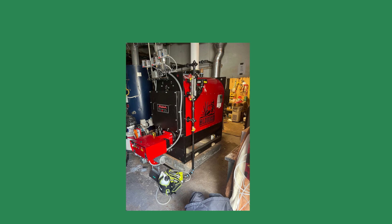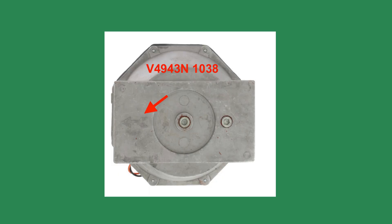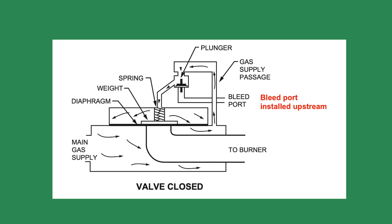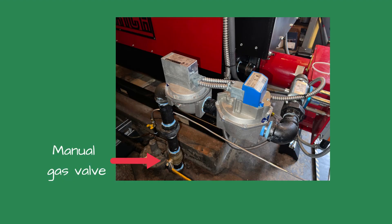I learned two things from this case. Always verify the gas valves are installed with the proper flow direction — the incoming gas pressure helped seal the diaphragm closed. The second thing was to instruct the installer never to open the incoming manual gas valve before startup. Gas was leaking through the valves and into the idle boiler.